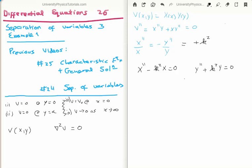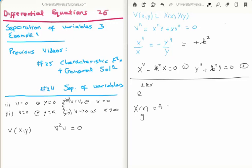Solving these equations is straightforward, as discussed in video 25. For equation number 1, the solutions are real exponentials: e to the plus or minus k times x. The general solution, capital X of x, is a times one particular solution plus b times another particular solution. Plugging in the two particular solutions, we get X(x) equals a times e to the kx plus b times e to the minus kx. Very simple.